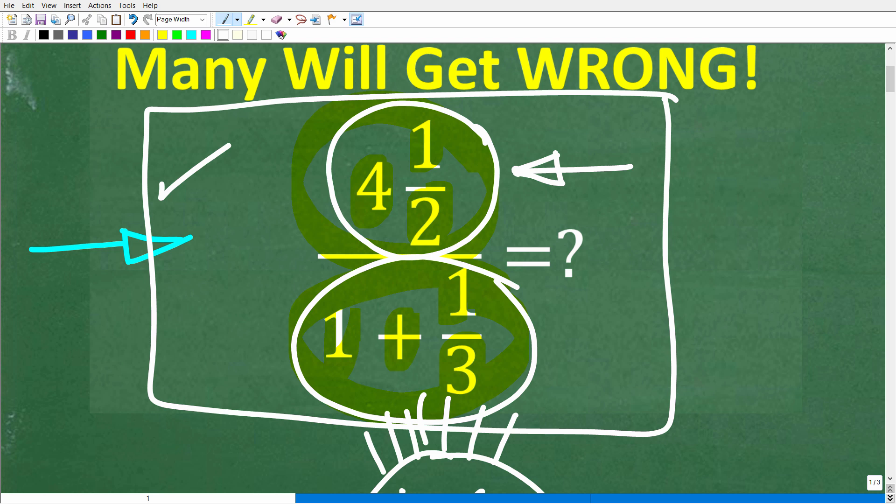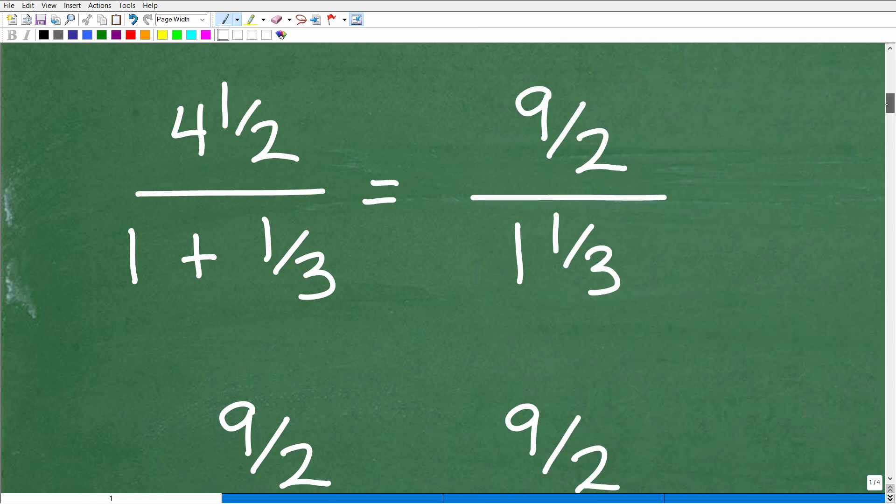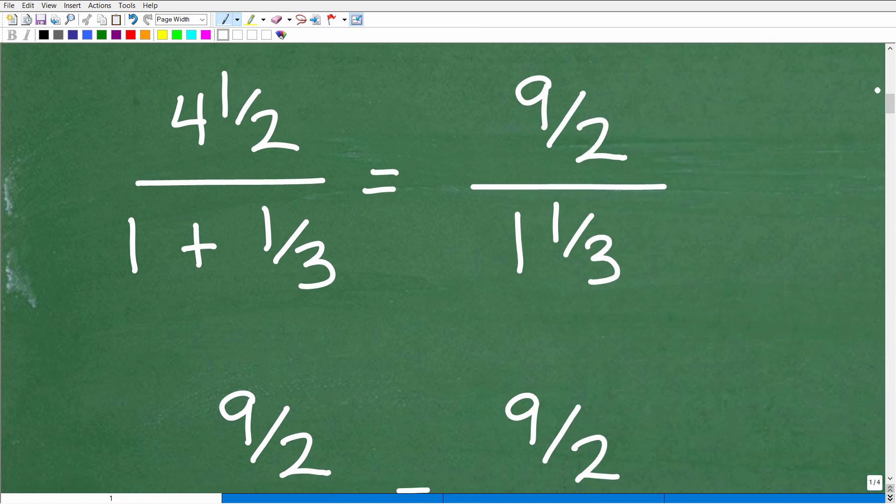Alright, so let's go ahead and get into the solution right now. So here we have 4 and 1 half divided by 1 plus 1 third. We have mixed number fractions. You always want to take your mixed numbers and write them as improper fractions. So 4 and 1 half is the same thing as 9 half. Remember to convert a mixed number into an improper fraction. By the way, I'm using these terms, mixed number, improper fraction, and proper fraction.